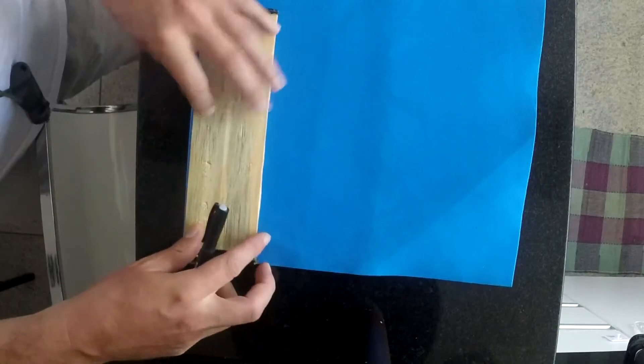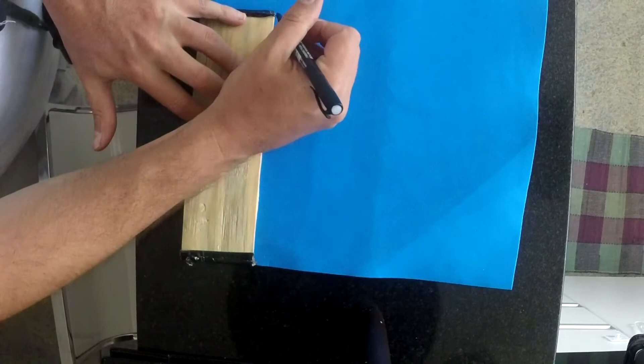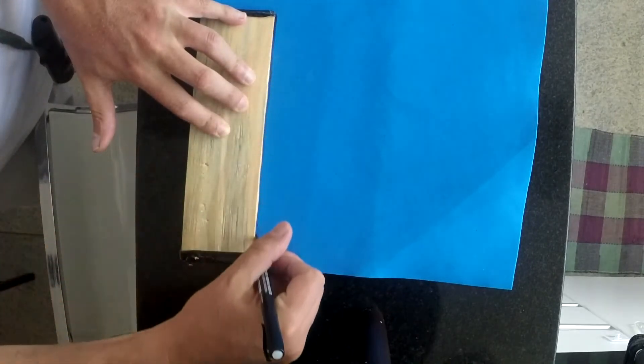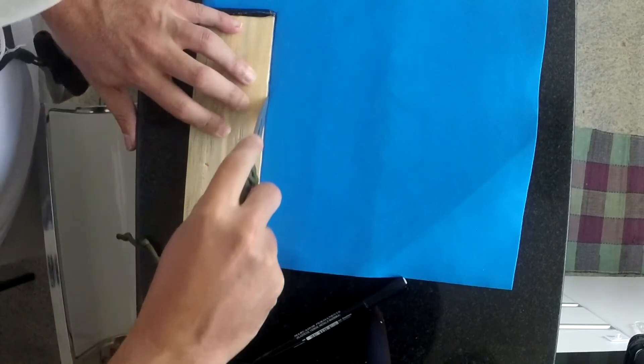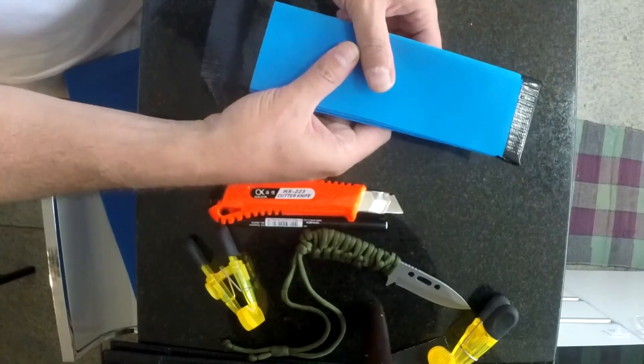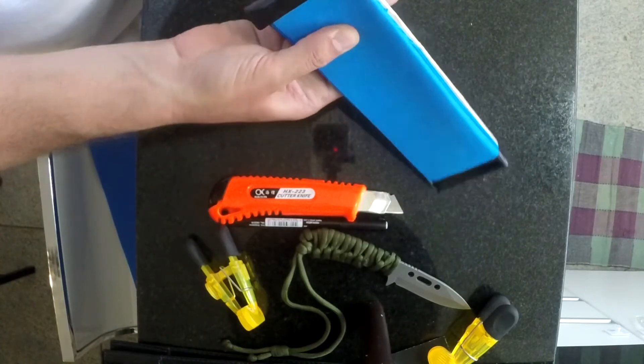Primeiro você vai precisar de um suporte, o suporte pode ser de madeira ou de plástico rígido. Você vai riscar para poder marcar no EVA, dobra ele, eu dobrei quatro vezes, então quatro camadas, depois passa a fita duct tape para prender nas duas extremidades da sua prancha.